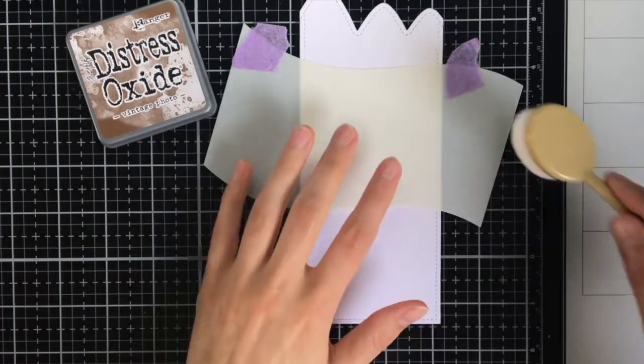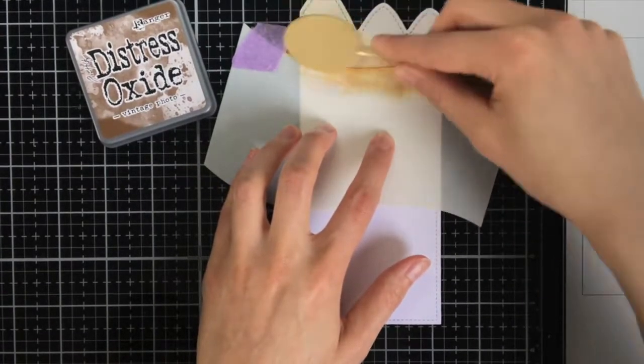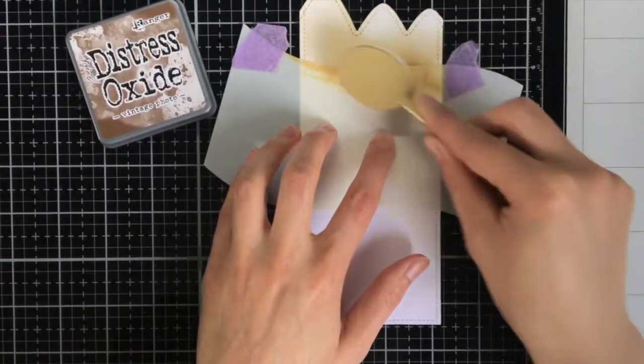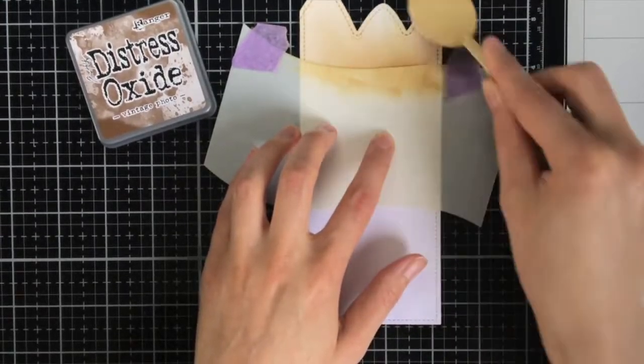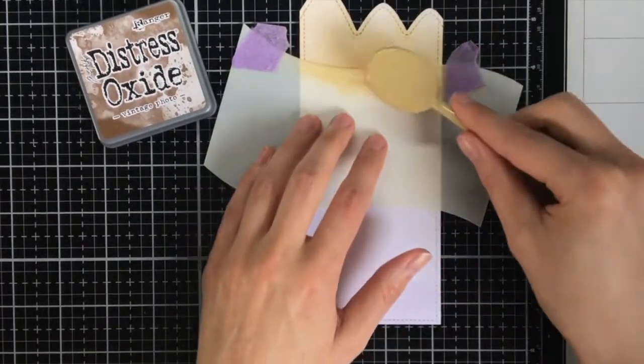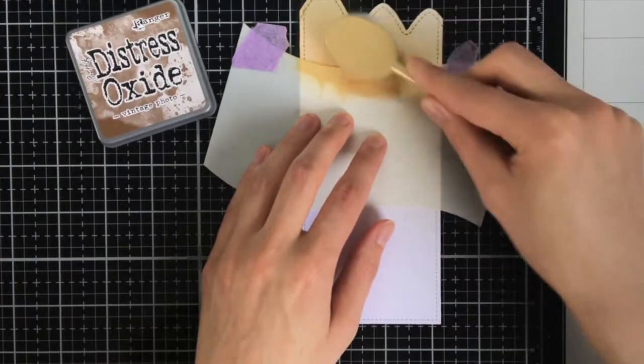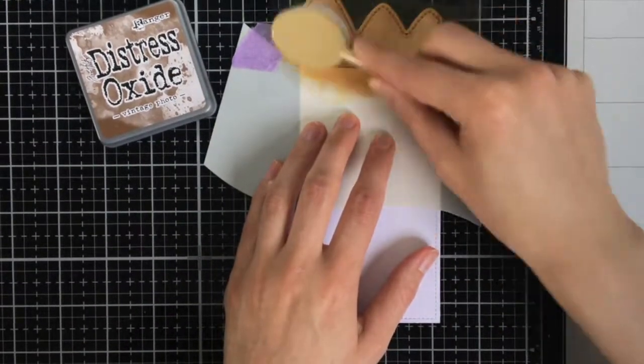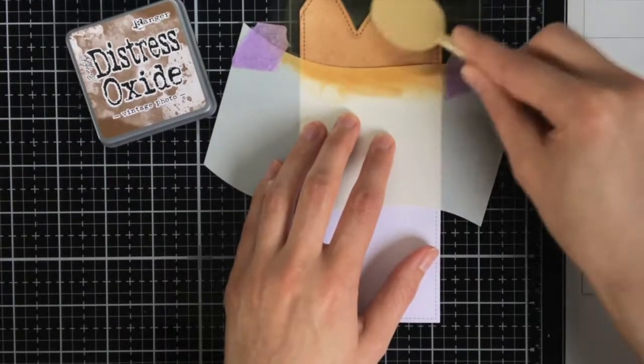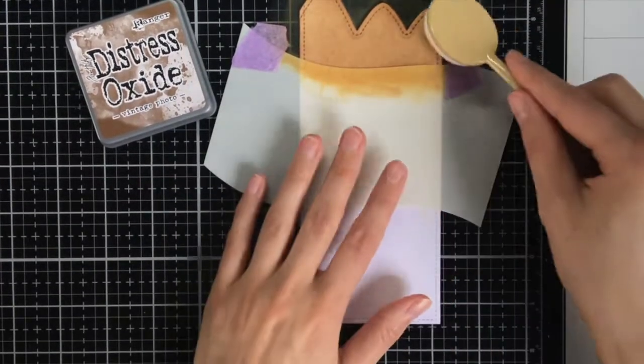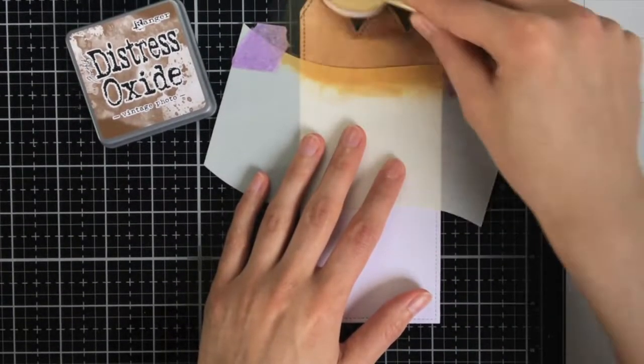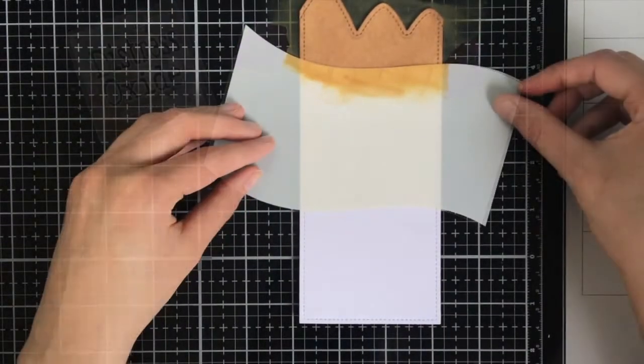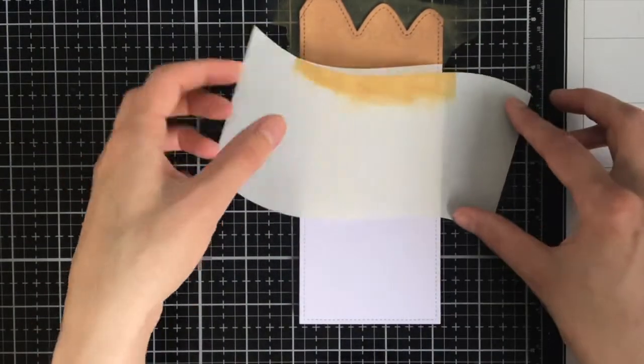I die cut a slimline panel once more and this time I used the stitched mountain borders at the top. To color the mountains I am using Distress Oxide Ink Vintage Photo. To mask off the bottom of the card I am using the hillside border stencil. The part of the card that is now masked off that will be grass, so that is why I don't want any of the brown ink on that area.